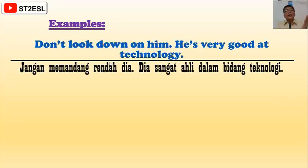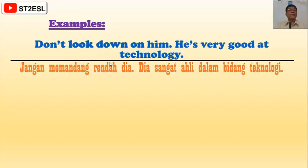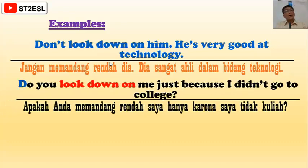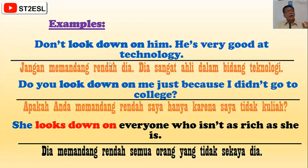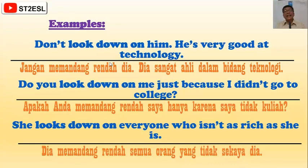Examples of 'look down on': 'Don't look down on him — he is very good at technology' — jangan memandang rendah dia, dia sangat ahli dalam bidang teknologi. 'Do you look down on me just because I didn't go to college?' — apakah anda memandang rendah saya hanya karena saya tidak kuliah? 'She looks down on everyone who isn't as rich as she is' — dia memandang rendah semua orang yang tidak sekaya dia.